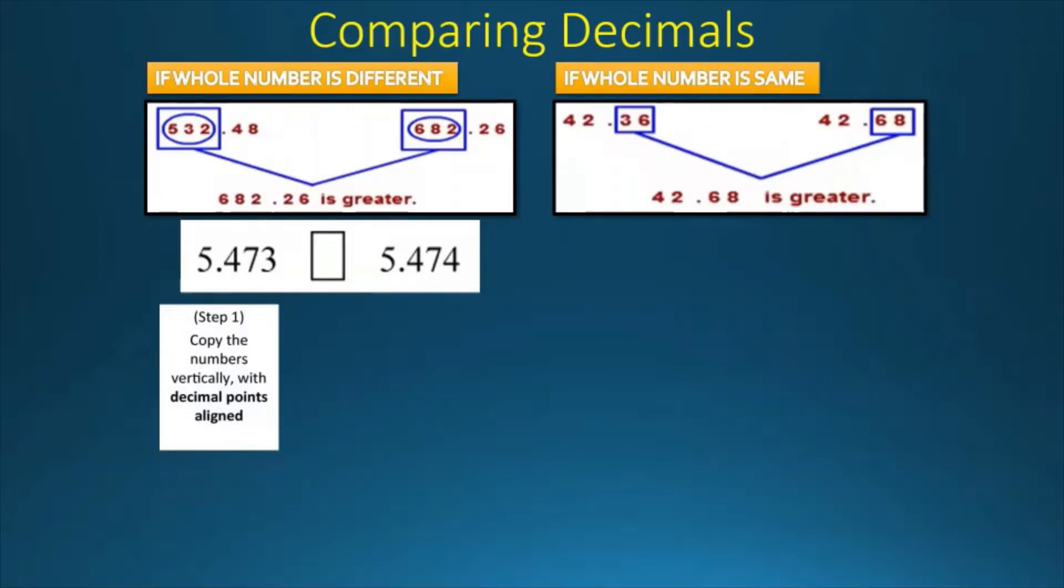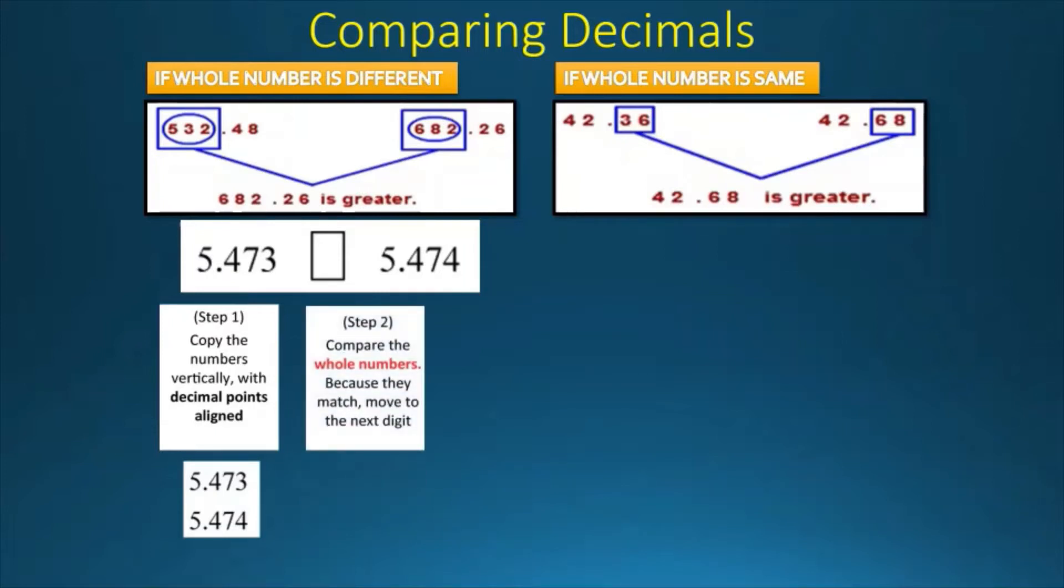The first step is to copy the numbers vertically with the decimal points aligned. For example, it will be 5.473 to 5.474. Step 2 will be comparing the whole numbers. If they match, then we have to move on to the next digit. 5 and 5 match, so you have to go to the next digit.